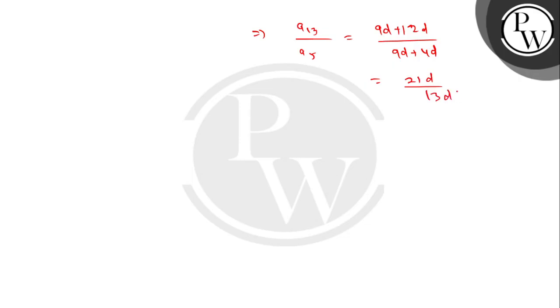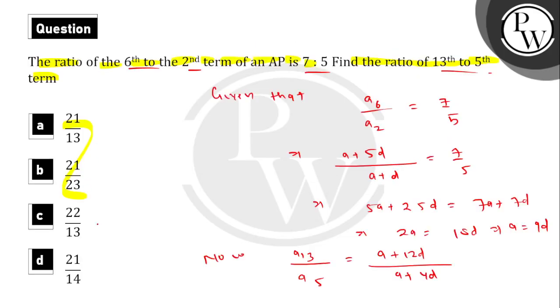After d cancels out, 21 upon 13. So the correct option is option number A. Hope you understood. Thank you.